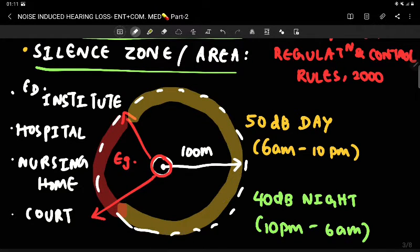So in this area, 50 decibels sound in the daytime and 40 decibels at nighttime is the criteria that satisfies the silence zone. Daytime means 6 a.m. to 10 p.m., and 40 decibels at night means 10 p.m. to 6 a.m.